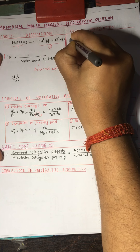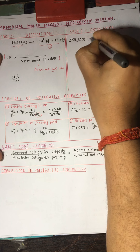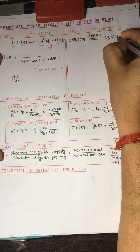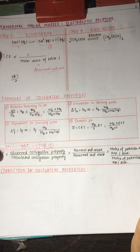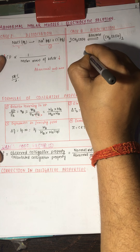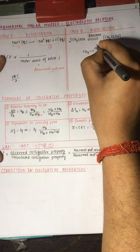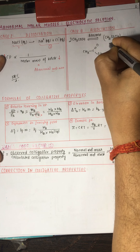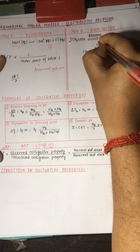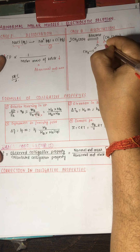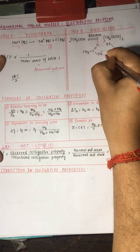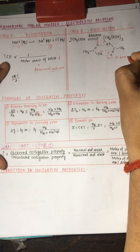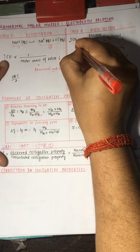Now let us talk about the case of association, taking the example of acetic acid (CH₃COOH) in benzene as a solvent. Dimerization takes place: two molecules of acetic acid associate to form a dimer. This dimerization occurs due to the formation of hydrogen bonds — the oxygen with negative charge and hydrogen with positive charge form hydrogen bonds between the two acetic acid molecules.